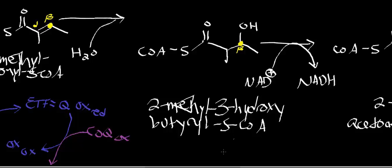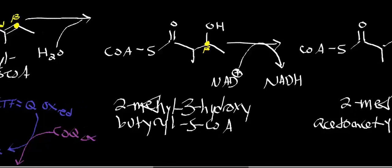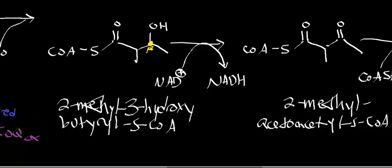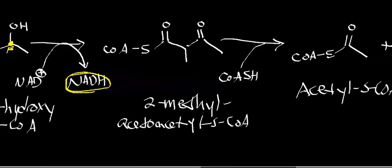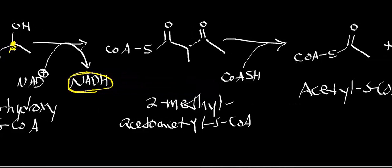Just like in beta-oxidation, we do an NAD-dependent oxidation of the hydroxyl group up to a ketone. The analog in beta-oxidation was beta-hydroxyacyl-CoA dehydrogenase; here it's 2-methyl-3-hydroxybutyryl-S-CoA dehydrogenase. In the process, we generate an NADH and the product 2-methyl-acetoacetyl-CoA.